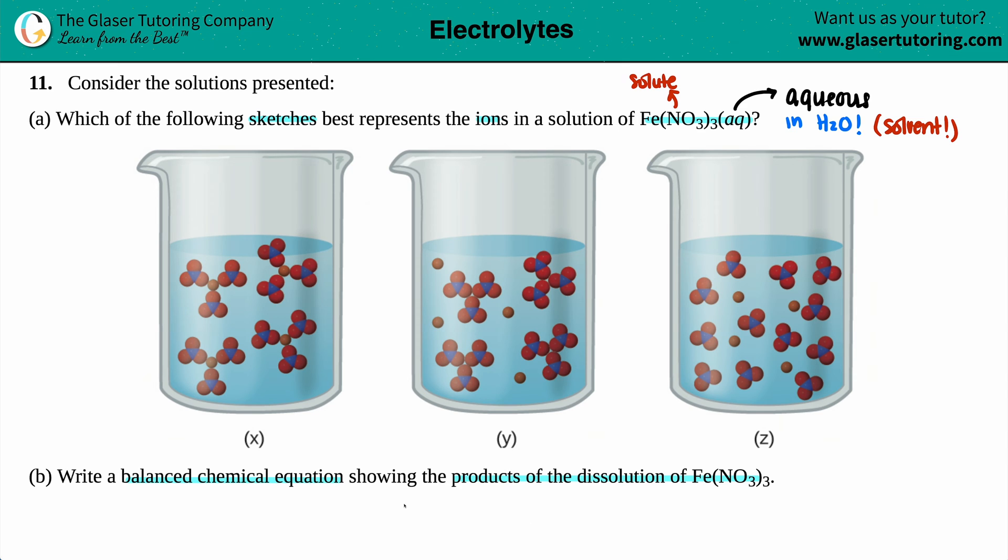So we're going to write that chemical equation to break down the dissolution. Dissolution just means that you are breaking down into ions. Especially if you are in an aqueous solution, if you have an ionic compound, the ions are going to be predominant.